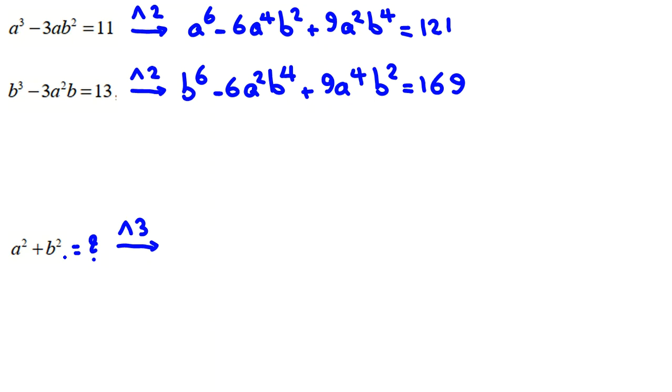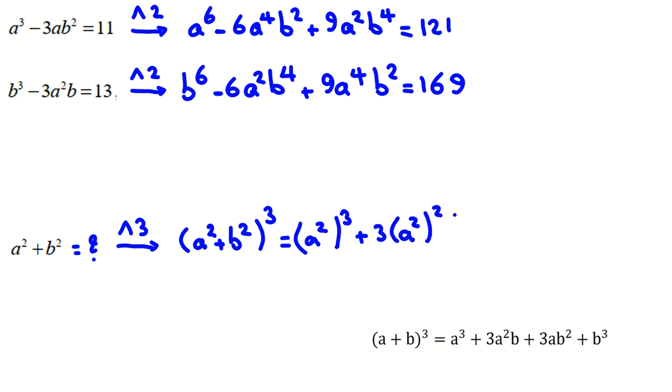Now I want to raise this to the power of 3 to reach degree 6. So it will be (a² + b²)³. Now I use this identity. You should memorize this. a² cubed plus 3 times a² squared b² plus 3a²(b²)² plus b² cubed.